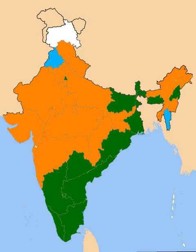Twelve incumbents belong to the Bharatiya Janata Party and five to the Indian National Congress. No other party has more than one chief minister in office.